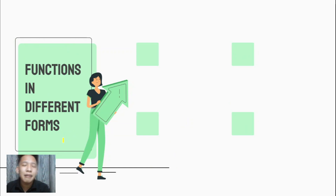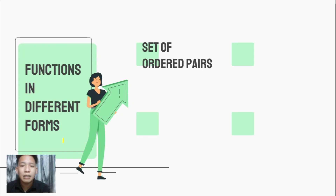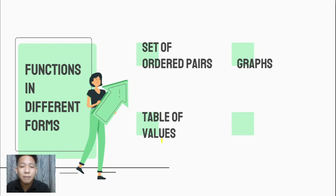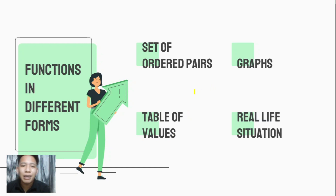Functions can be illustrated in different forms. It can be illustrated as a set of ordered pairs, through a table of values, and if we have a table of values then we can definitely graph it. We can also illustrate functions using real-life situations.